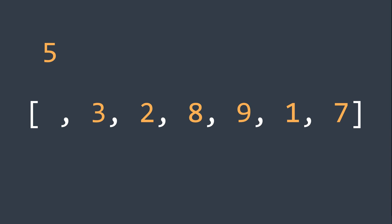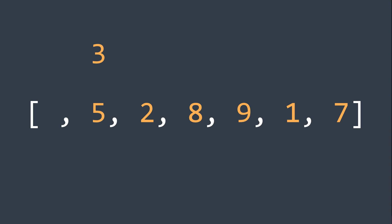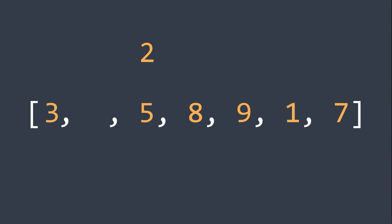For example, first we have 5 — it has no preceding elements, so we put it back directly. Next element, 3: because 5 is greater, we shift it to the right and put 3 from the left. Next element, 2: 5 is greater so we shift it, same thing for 3, and we put 2 from the left.